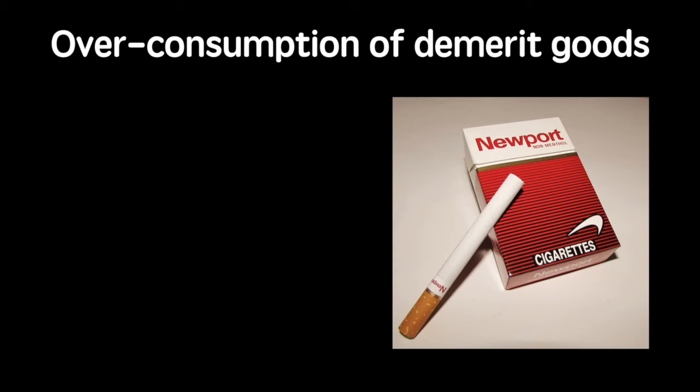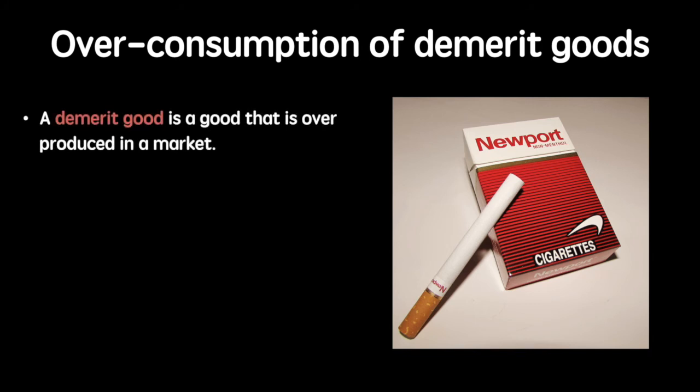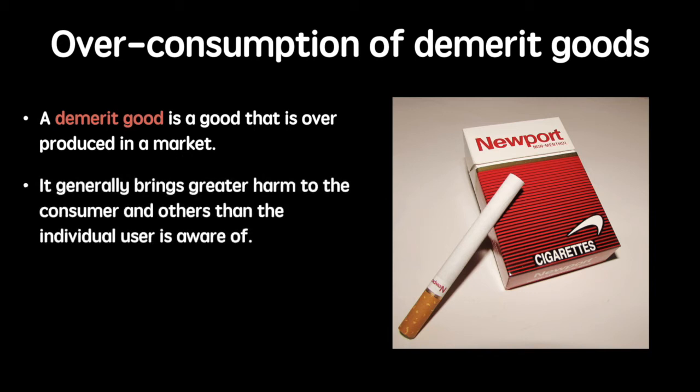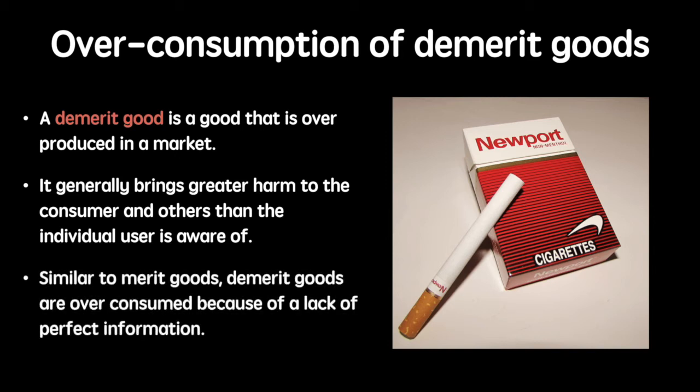The second cause of market failure is the over-consumption of demerit goods. Demerit goods cause greater harm than the user realizes, both to the individual and other third parties. This impact on third parties is called an externality, which we will explore shortly in another video. Due to a lack of information about the harm of consuming such a good — like cigarettes — they may be over-consumed. The government may intervene to reduce the amount of cigarettes being consumed in order to benefit the greater society.